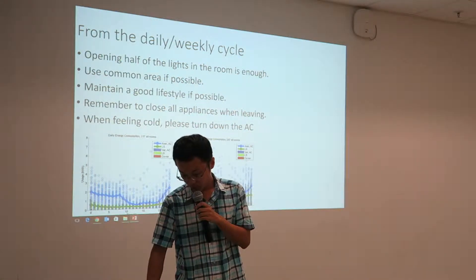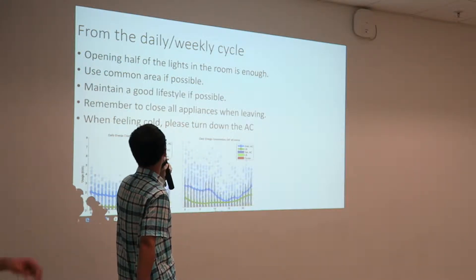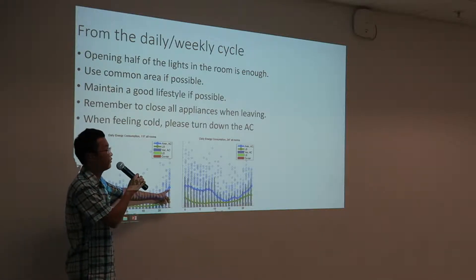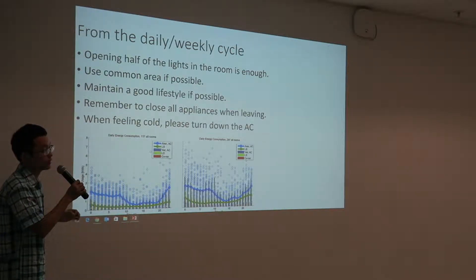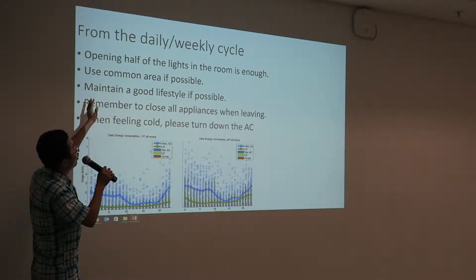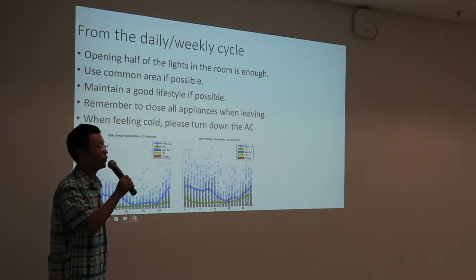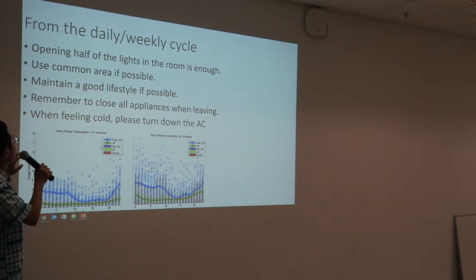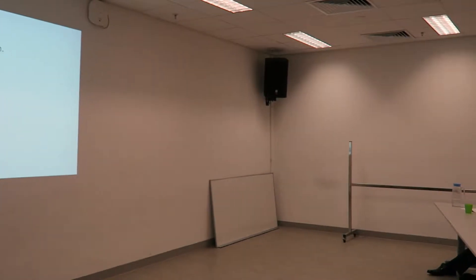After looking at what we can find in the daily and weekly cycle, we found a peak of usage at midnight. To cut down this kind of peak usage: first, we may open only one of the lights in the room, since there are two switches in a double room and one is enough to light the whole room. Besides that, use common areas if possible, because midnight usage is mostly AC usage on hot days — sharing the same AC and lights in a common area reduces energy consumption. Also, maintain a good lifestyle: going to sleep a little earlier and getting up earlier means more hours in daytime when we don't need all the lights on. Remember to close all appliances when leaving, and when you feel cold, turn down the AC, as excessive cooling is bad for health and consumes a lot of energy.